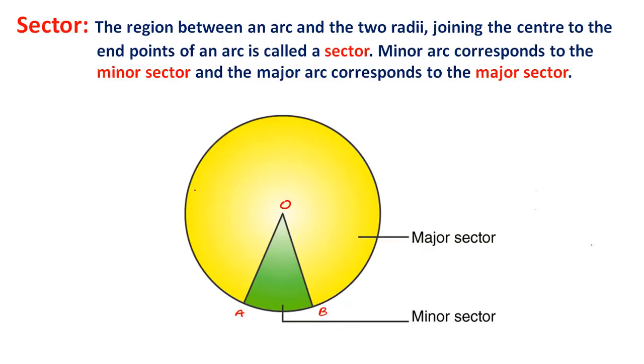What is a sector? The region between an arc and the two radii joining the center to the endpoints of an arc is called a sector. Minor arc corresponds to the minor sector, and the major arc corresponds to the major sector.